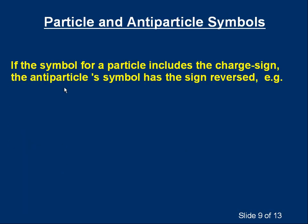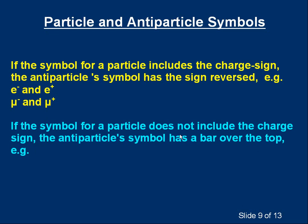A couple of words about the symbols we use. If the symbol for a particle includes a charge sign — a plus or minus — then the antiparticle symbol simply has the sign reversed. So e⁻ is an electron, and we reverse the sign and write e⁺ for a positron. For particles such as a muon, the normal particle is mu minus and the antimuon is written as mu plus. If the symbol for a particle doesn't include the charge, we put a bar over the top — as we saw for proton/antiproton and neutron/antineutron.